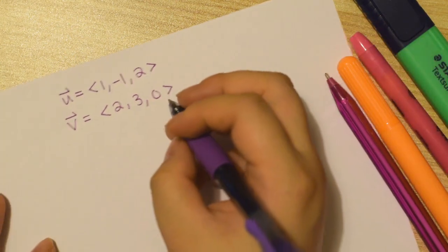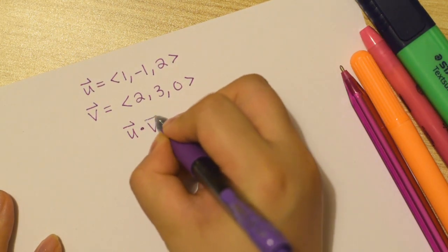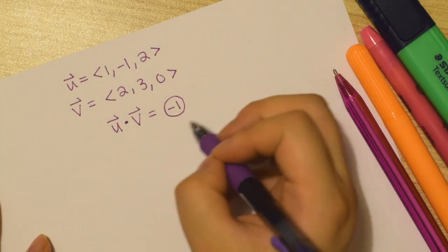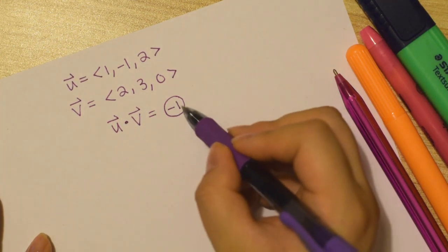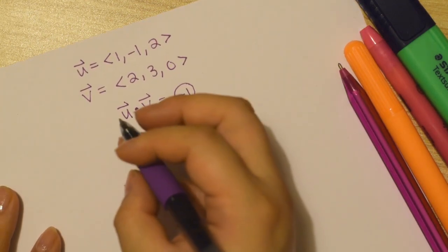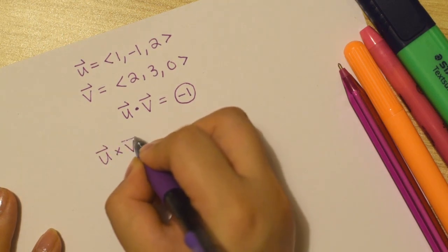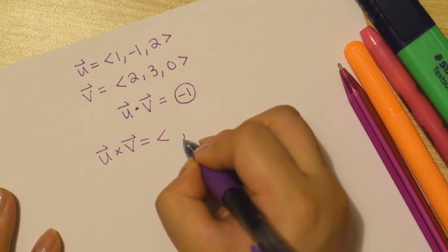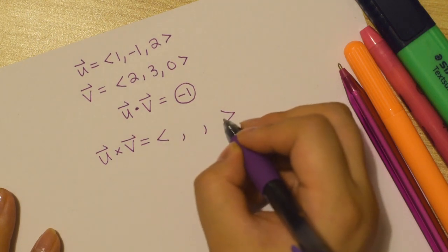And in that video we found that u dot v is negative 1. And all I want to point out from that video is that for the dot product we get a number or a constant or a scalar. Whereas today when we find u cross v, we expect to get another vector.